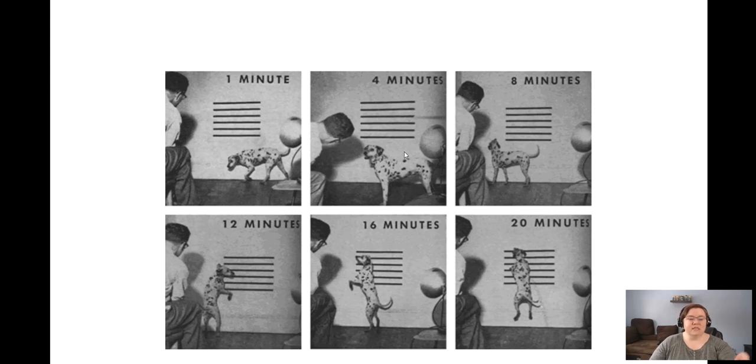So what I'm showing you here is time and how the shaping procedure went. When Skinner started, we're just seeing what the dog will do and within the first minute or so, Skinner is reinforcing the dog whenever they're kind of near the wall. Around four minutes, what Skinner is waiting for is for the dog to really consistently go over to that wall space where the little lines are.